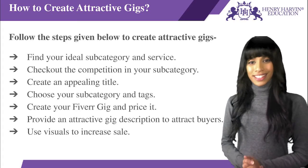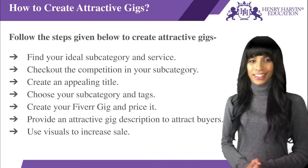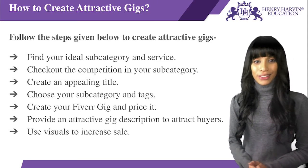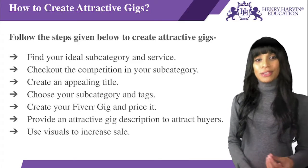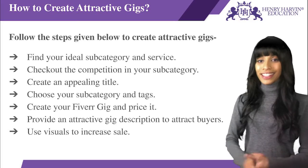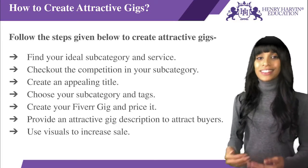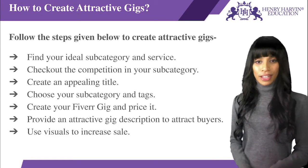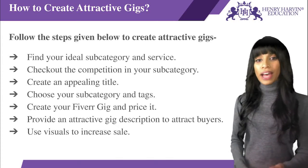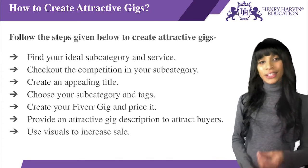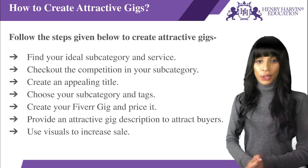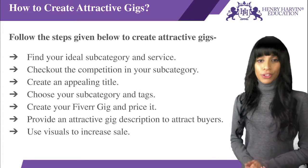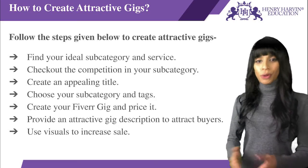Then switch back to the selling interface and start setting up your Fiverr gig. Create an appealing title. With thousands of providers to scroll through, buyers will use the gig title to decide which gigs are worth their time, so it's important to highlight your unique selling point in the 80 characters you have. The three ways to make your title stand out are: use adjectives to describe your service — add emotion rather than just calling it 'professional'; include a related service, for example with video you can add that you do post-production; and add your delivery time — if you deliver within 24 hours, it's worth mentioning in the title.